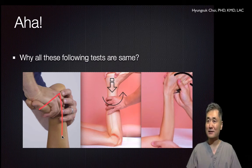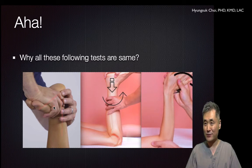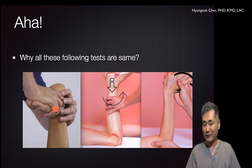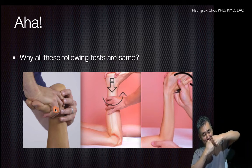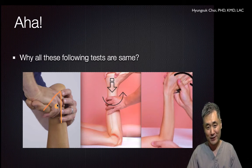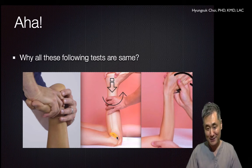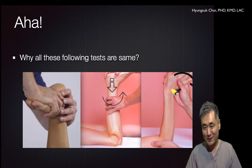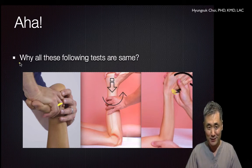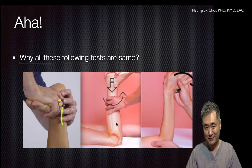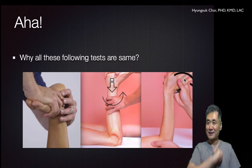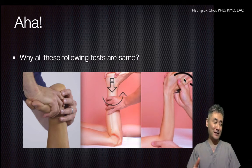Why do all these following tests share the same mechanism? First, dorsiflexion of the ankle — this is the test for ankle anterior impingement syndrome. With forced dorsiflexion, you are irritating the jamming and bumping of two bones. The meniscus compression test compresses the cartilage between two bones. All these tests examine something between two bones by compressing and twisting. So if you suspect something inside between two bones, you test this way.